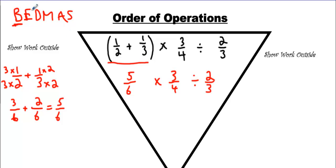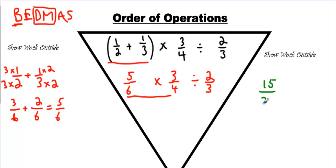What does BEDMAS say? It says that we have division and multiplying next. Whichever comes first is what you do first. Multiplying is first, so we'll underline it and solve it. Solving this is pretty simple — 5 times 3 is 15, and 6 times 4 is 24. But always reduce your answer. Make it simple. You can divide these by 3, and if you do that, you're going to get 5 over 8. We'll write 5 over 8, then bring everything else down.